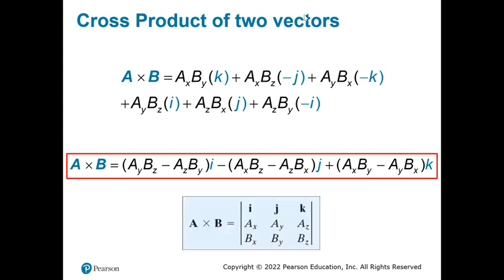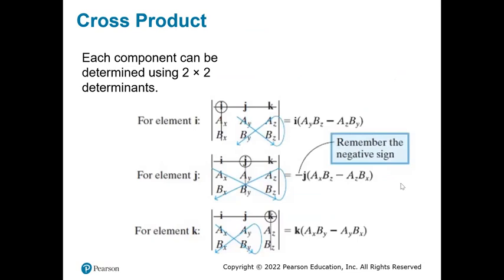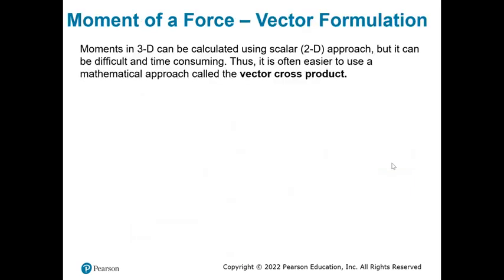Since the full expansion is hard to remember, the simple way is to use the determinant method. Set up a 3×3 determinant with i, j, k in the first row. To find the i component, cover the i column and cross-multiply the remaining elements. Do the same for j and k components.